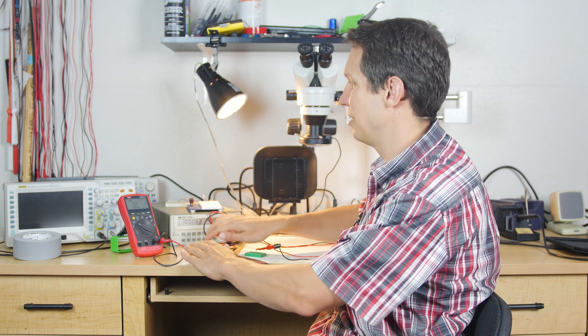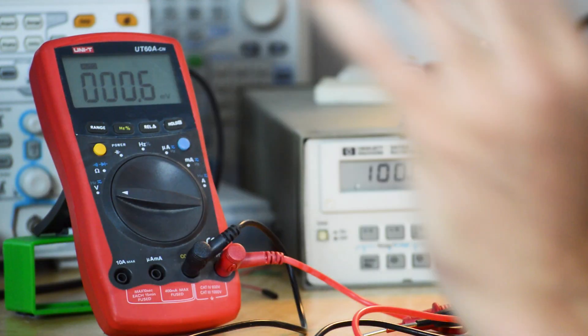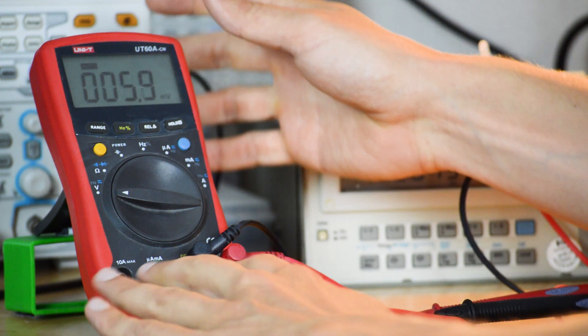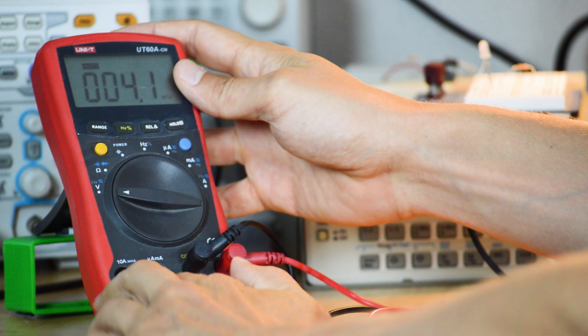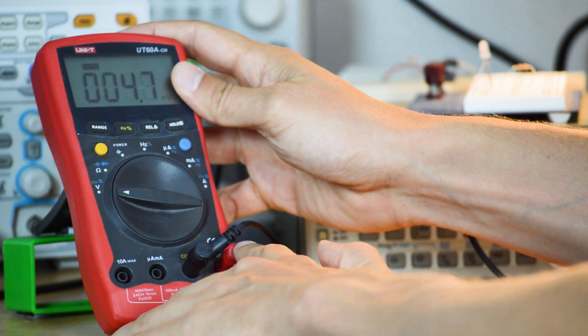So since it's a multimeter and it does lots of things, we can also check the voltage. Now this is where things get tricky. If you notice there's four holes down here and it says 10 amps, micro amps, milliamps, common, and then voltage.